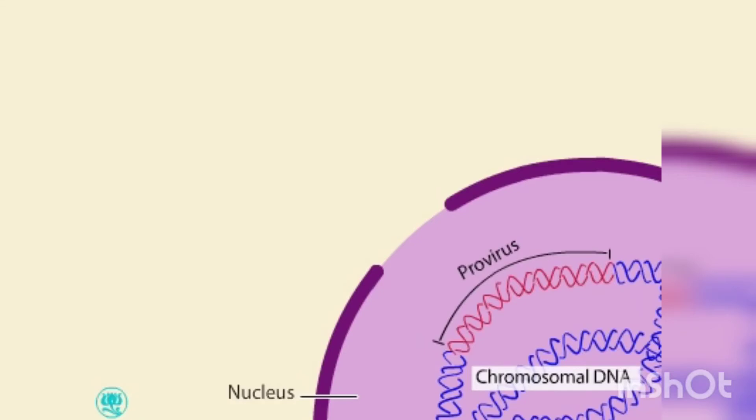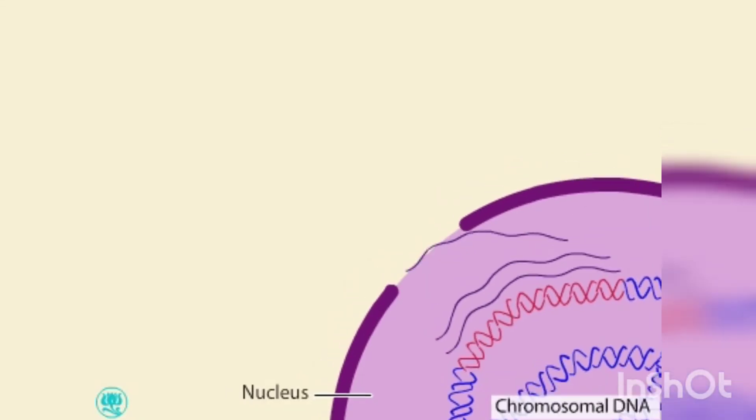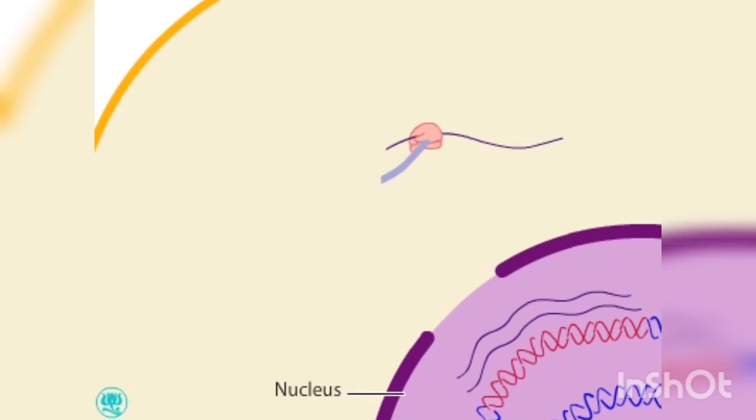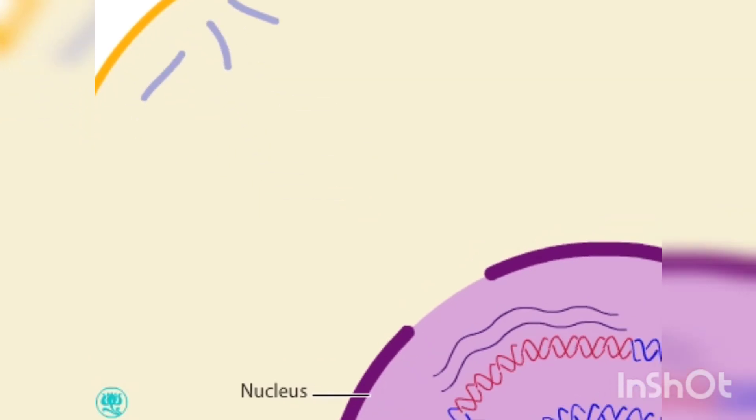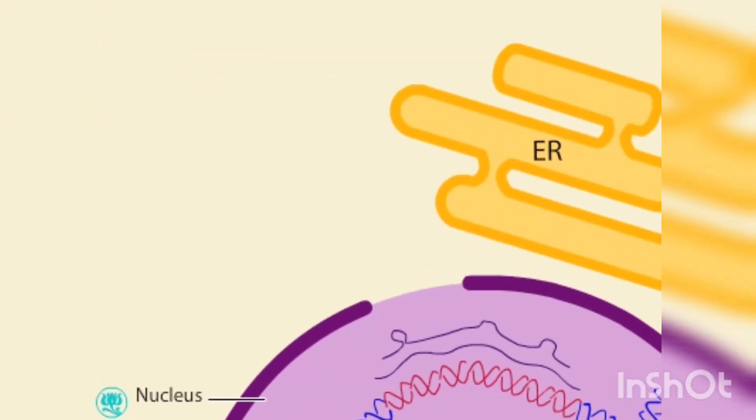The synthesis of the viral genome begins with the transcription of the proviral DNA into RNA. The viral RNA contains the code to produce the capsid proteins and other proteins needed for viral assembly. In spliced form, the RNA also codes for the envelope proteins and other auxiliary proteins.